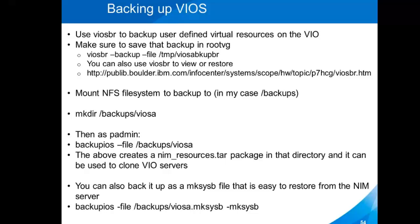So then you mount your NFS file system. There are a couple of different ways to do the backups depending on what you want to do. One is to simply do a backup that creates the NIM resources TAR package. I personally just do makesysbS. You'll see that I have a backup where I'm writing a file called viosa.makesysb to my NFS file system, and I put the -makesysb flag on the end so that it does a proper makesysb.